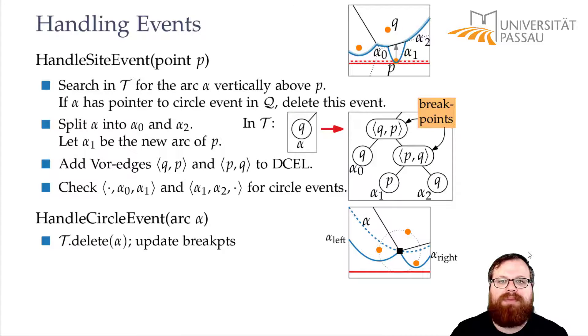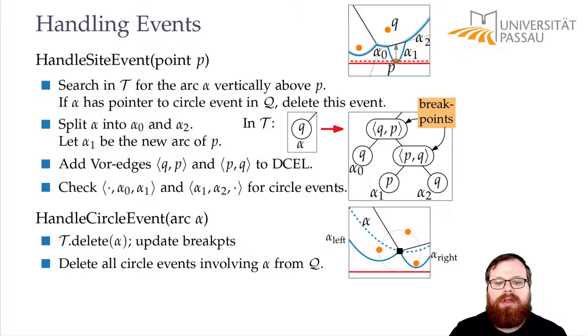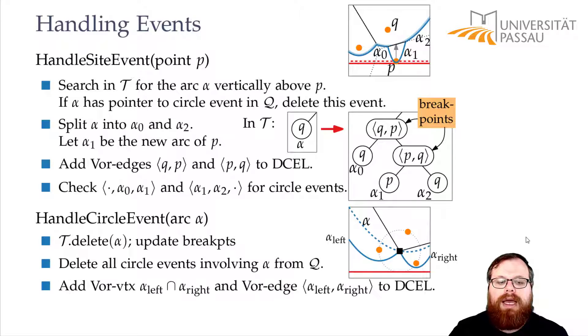So we delete it from the beachline and we update the breakpoints. Before we had a breakpoint between alpha and its left neighbor, alpha left and alpha and alpha right. And now we have a new breakpoint between alpha left and alpha right. Then we delete all circle events that involve alpha because alpha is not on the beachline anymore. And we add a new Voronoi vertex at the intersection point of alpha left and alpha right here. And we start with the Voronoi edge that corresponds to this new breakpoint.